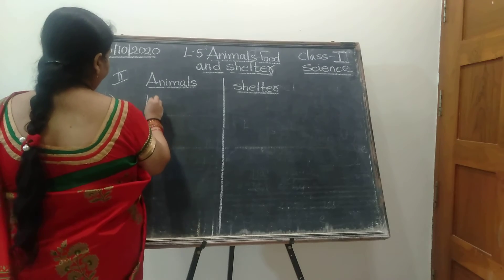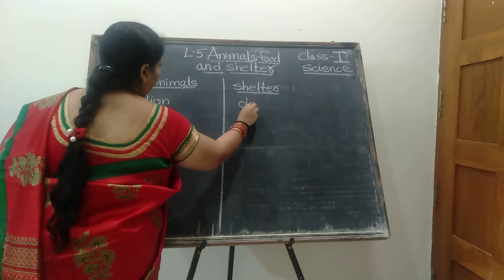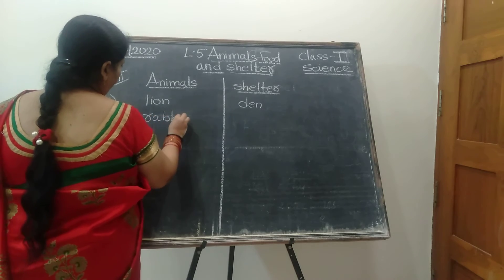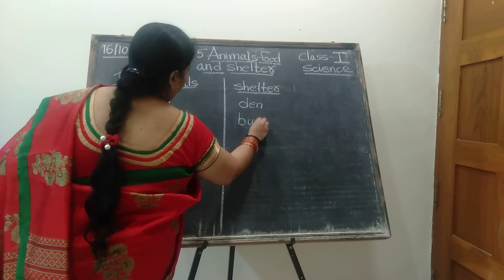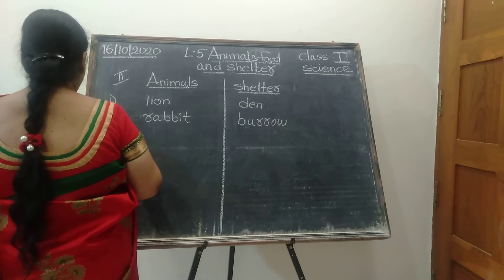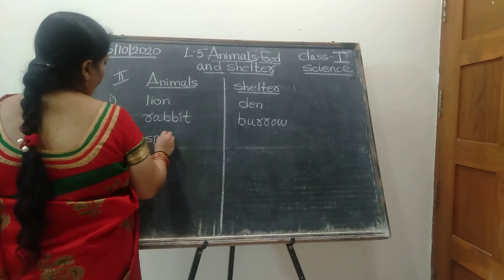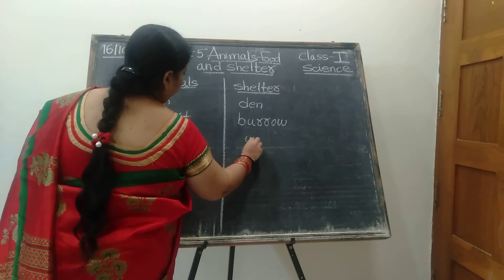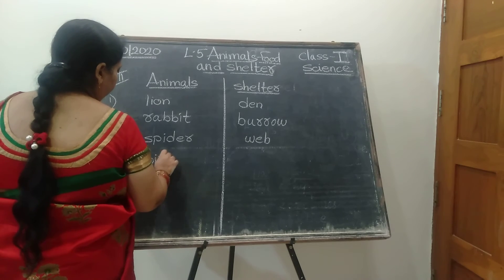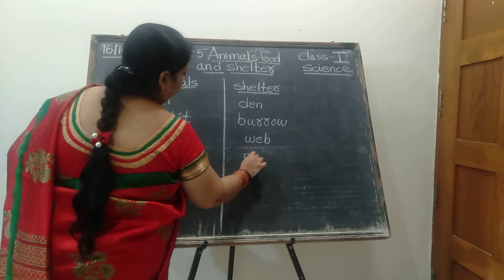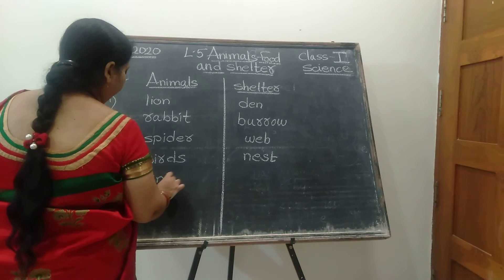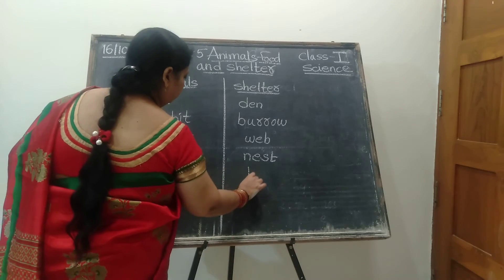Number 1 — Lion. Where does it live? Den. Write down. Number 2 — Rabbit. Rabbit lives in burrow: B-U-R-R-O-W. Number 3 — Spider, web. Next one — Birds, nest. Snake — hole. Snake pit, or you can say hole.